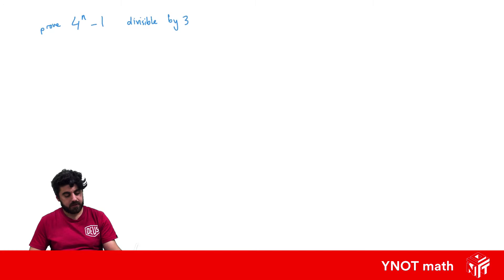we can just show that 4 to the n minus 1 must equal 3 times some integer. Because if that equals 3 times some integer, it would prove that it's divisible.